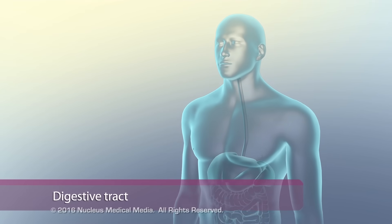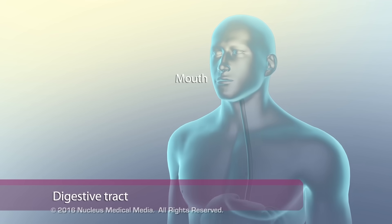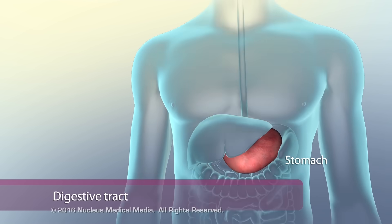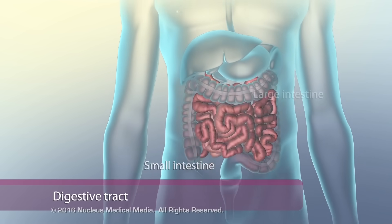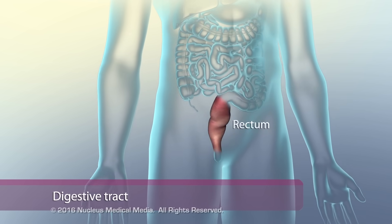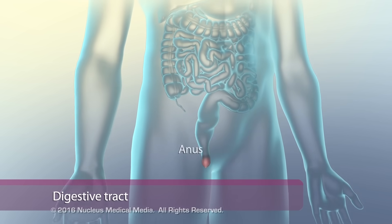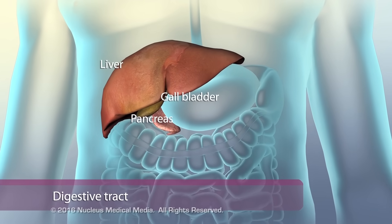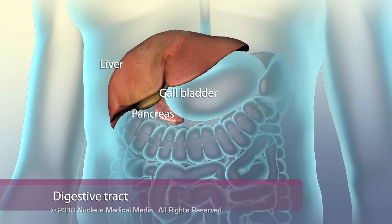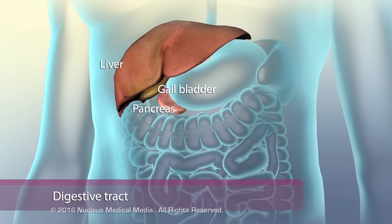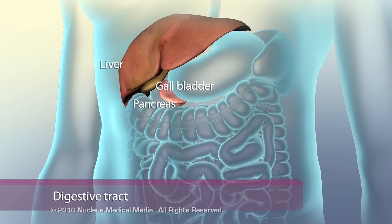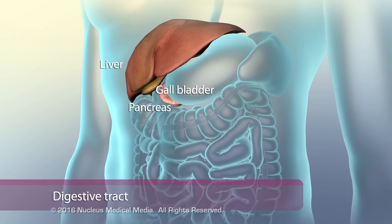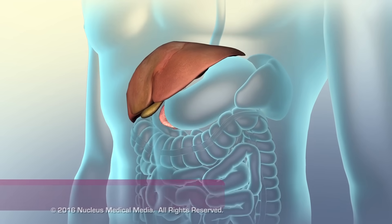The digestive tract includes the mouth, esophagus, stomach, small intestine, large intestine, rectum, and anus. The pancreas, liver, and gallbladder are accessory organs of the digestive tract that have many functions, one of which is to produce digestive juices and enzymes that aid in digestion.